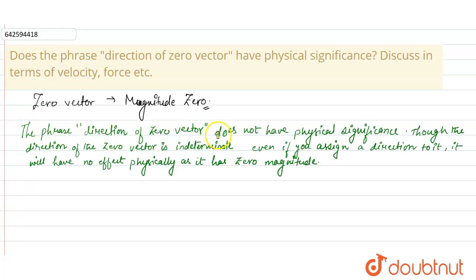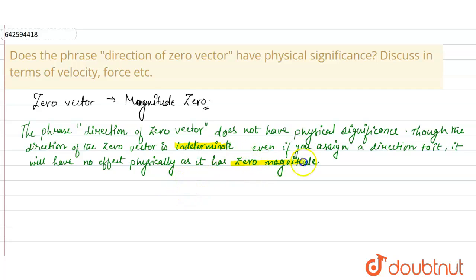So let us write it down: the phrase 'direction of the zero vector' does not have physical significance. The direction of the zero vector is indeterminate, and even if you assign a direction to it, it will have no physical effect as it has zero magnitude.